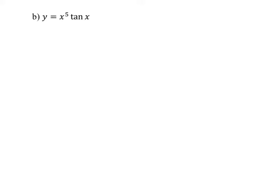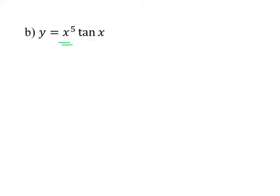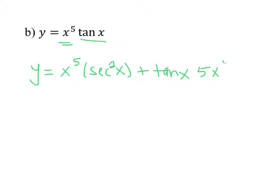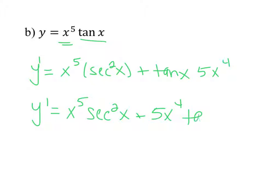The next question is another product rule, except this time we have tangent thrown in, so there's also a trig rule. The first piece is x to the 5th, and the second is tangent x. Keep the first, take the derivative of the second, which is secant squared x. Then keep the second and take the derivative of the first, which is 5x to the 4th. The answer is x⁵ secant²(x) plus 5x⁴ tan(x).